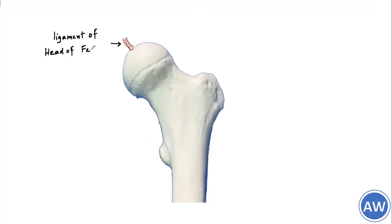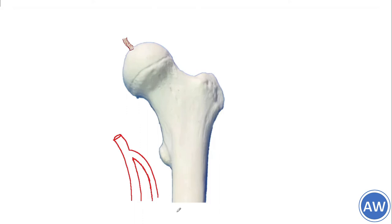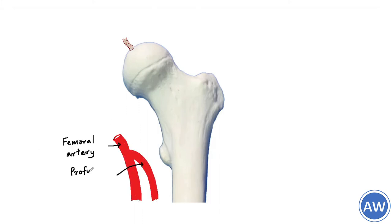This ligament is attached to a depression on the articular surface of the head called the fovea capitis. The arterial supply to the head of the femur mainly comes from a branch of the femoral artery called the profunda femoris artery.